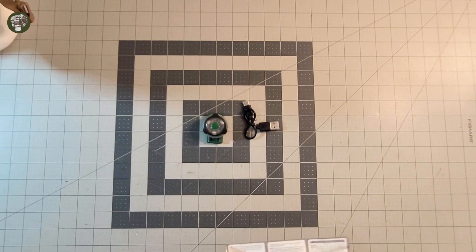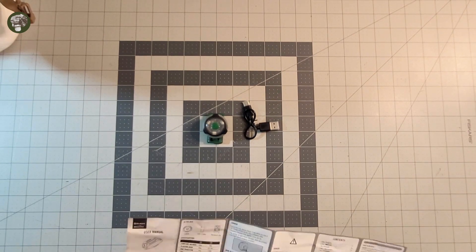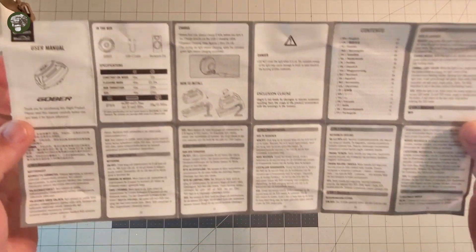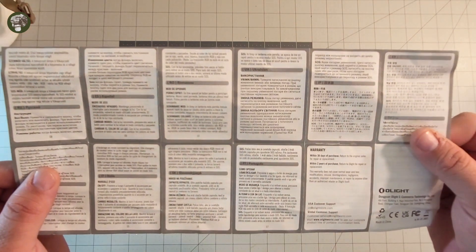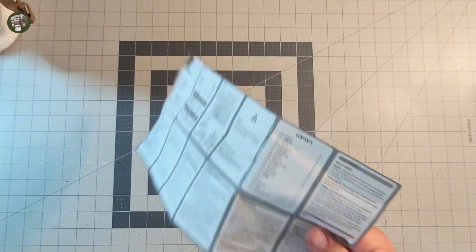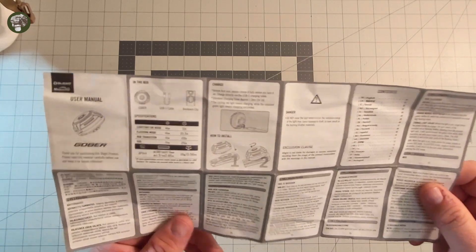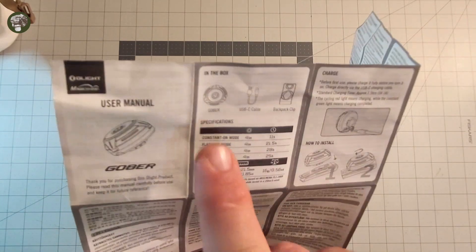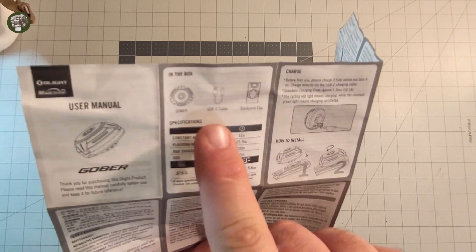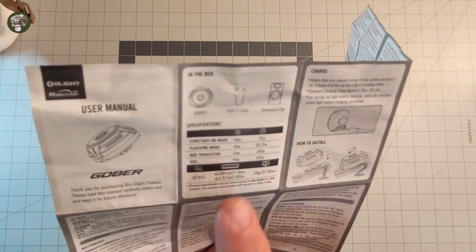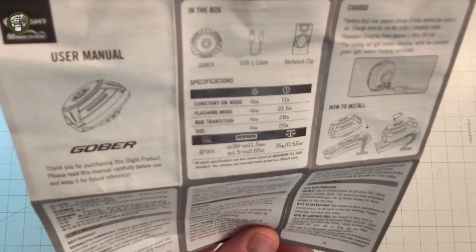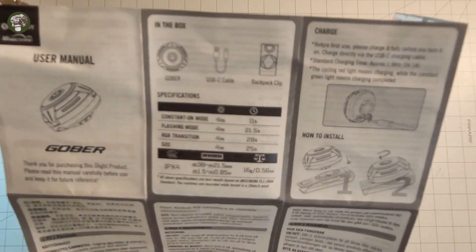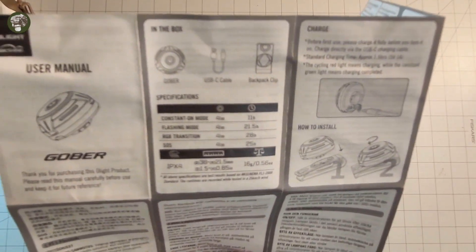They call it a MOLLE clip, so that tells me they're aiming this at military and milsim folks, not just backpackers. Nice instruction booklet with 17 different languages, so they really want to get this in as many hands as possible. It tells you the modes: constant on, flashing, RGB transition, and SOS with actual morse code.